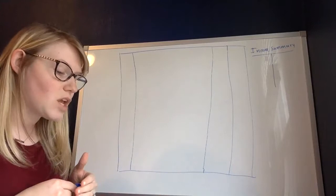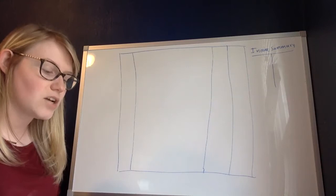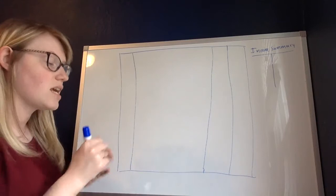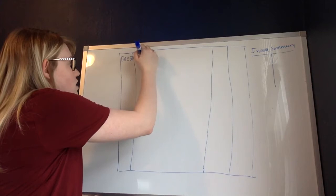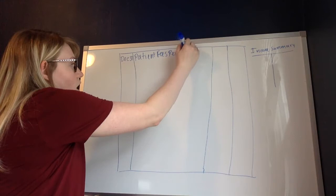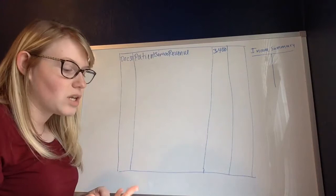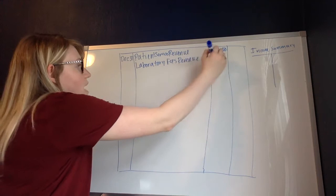So the very first step is closing the revenue accounts. The problem says assume that at the end of the accounting period there are credit balances of $3,400 in patient services revenue and $1,800 in laboratory fees revenue. To prepare this closing entry, because we want to decrease the revenue accounts we're going to debit them. The accounting period ends December 31st, so that's the date of our entry. We list patient services revenue as our first debit for $3,400, and then laboratory fees revenue as our second debit for $1,800.